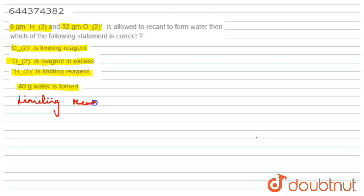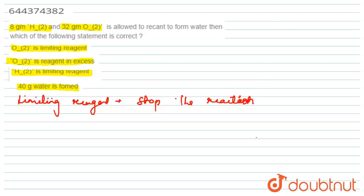The limiting reagent is the reagent which is completely consumed during the reaction. It stops the reaction because the reaction does not proceed further. The excess reagent is a reagent which is not completely consumed during the reaction.